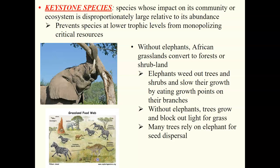Elephants are a good example of an herbivorous keystone species. In the African grasslands, elephants stop the grasslands from being converted into a forest or shrubland by knocking over trees and eating at critical growth points along branches, preventing trees from getting too big or too tall. If trees formed a large canopy, they would block light and kill grasses — which many organisms depend on for food and shelter. Elephants also disperse seeds, allowing some trees to grow while preventing them from completely taking over.